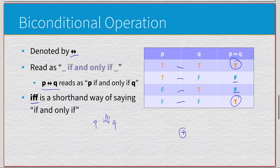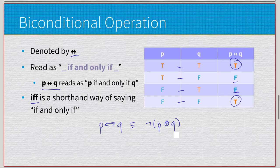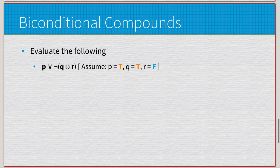If we did P biconditional Q, this would be logically equivalent, which we'll touch on later, to saying negation of P exclusive or Q. So the exact opposite. They are polar opposites of each other. Biconditional is true only when the inputs are both the same, and exclusive or is true only when the inputs differ from each other.